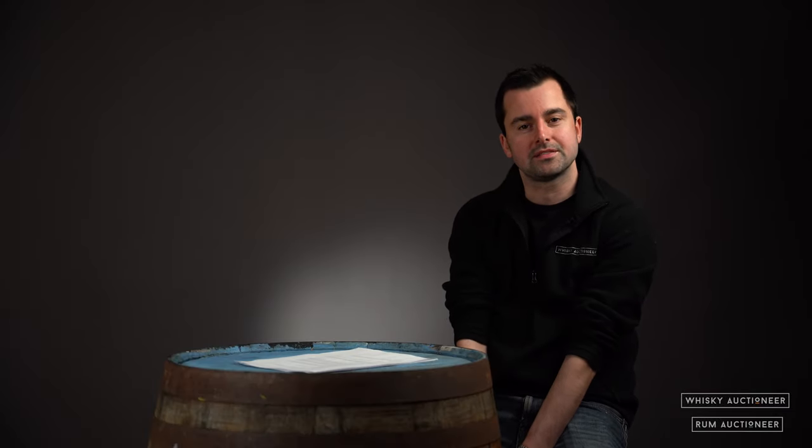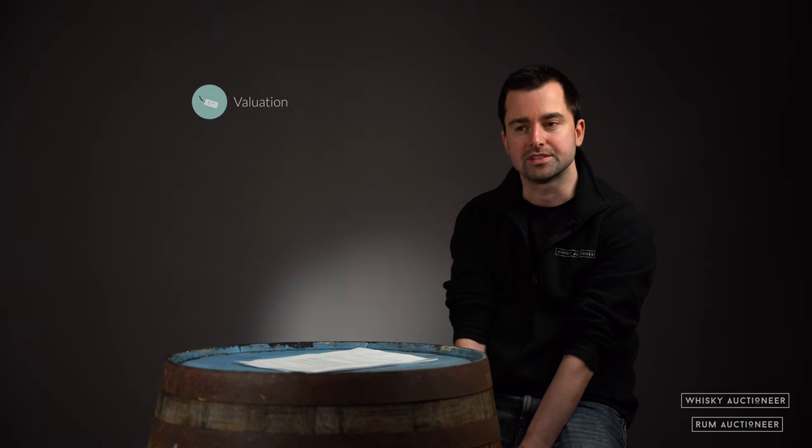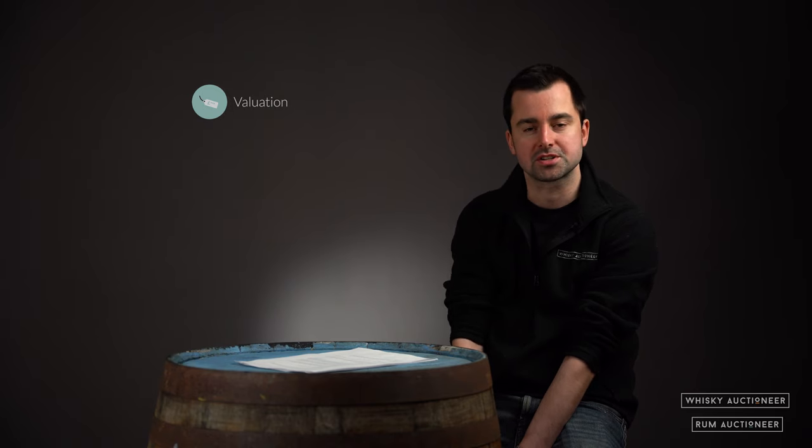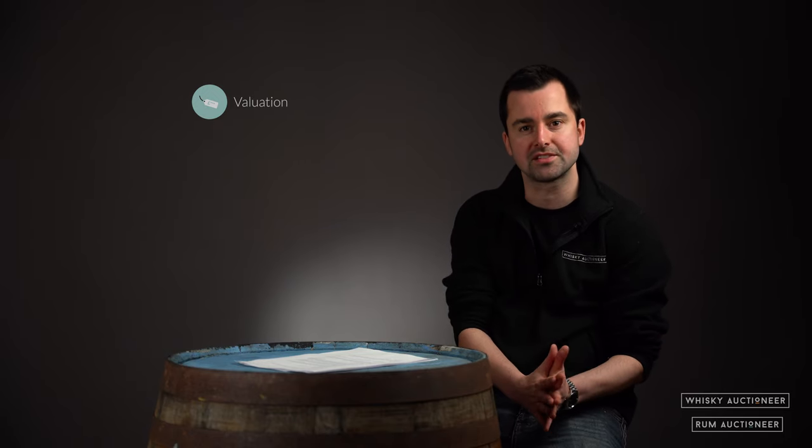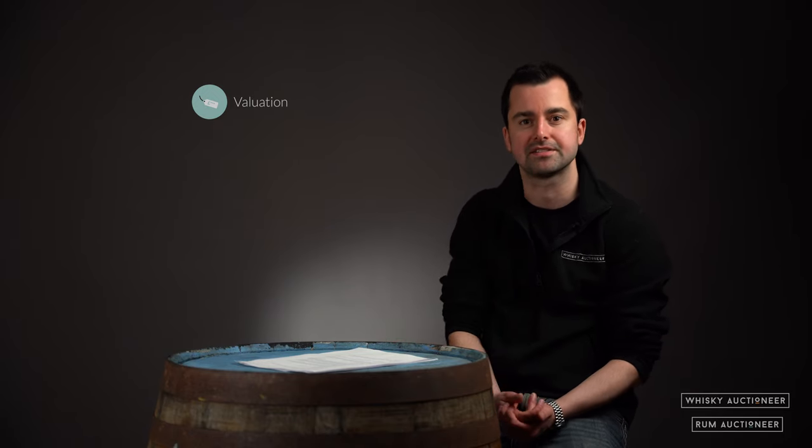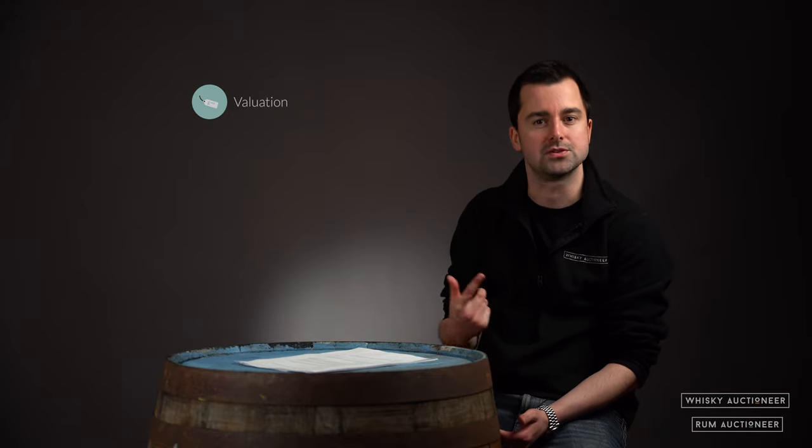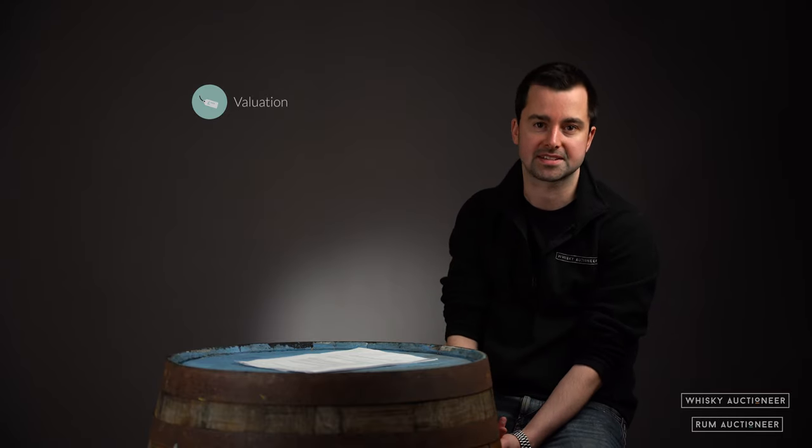Step number one of selling a cask at auction is valuation. We have a team of experts here at Whisky and Rum Auctioneer who can review previous auction results to give you an accurate estimate of what your cask might sell for at auction. This is based primarily on the re-gauge information, so the number of litres left in the cask and the strength, as well as distillery, vintage, and cask type.